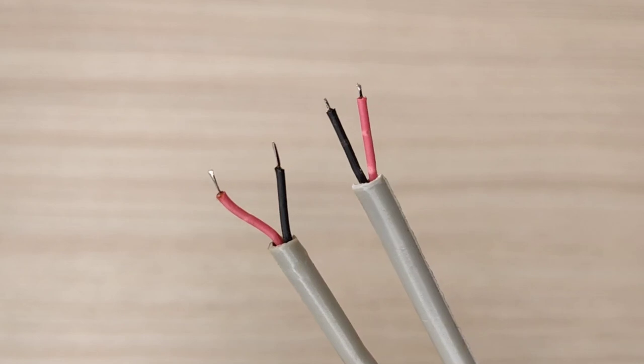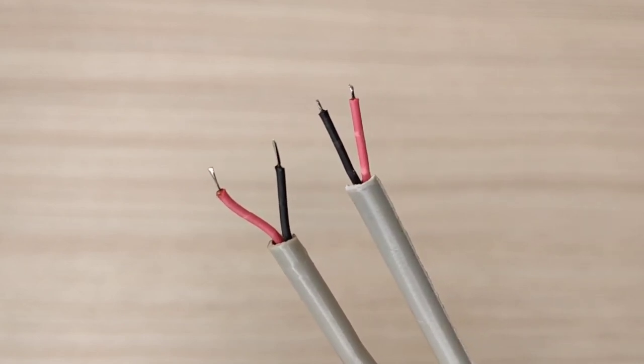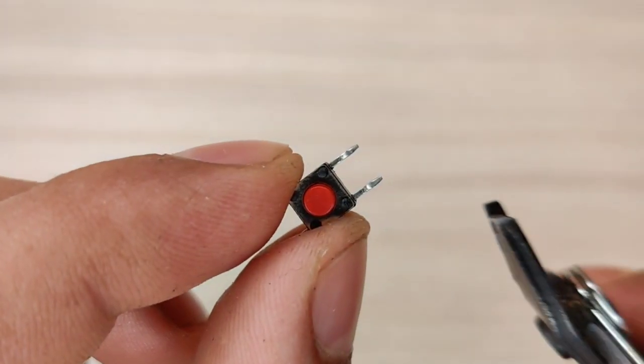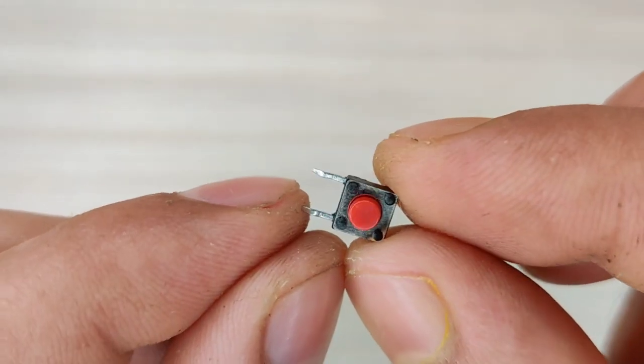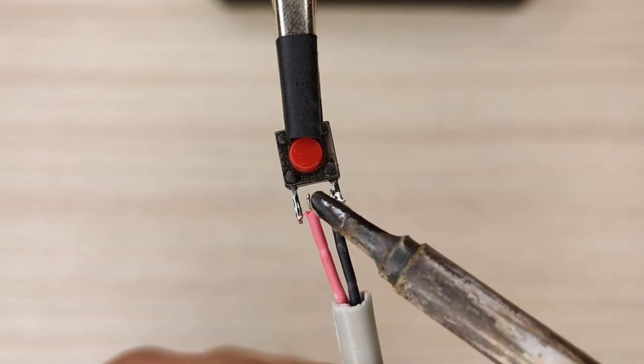Now we need this type of cable with two wires inside. Also we need a push button. Cut the one side pins of button. Now solder two wires with push button.